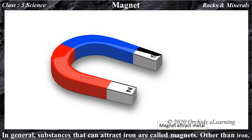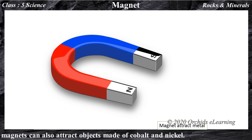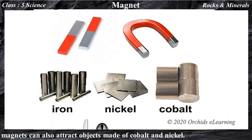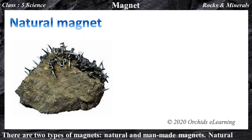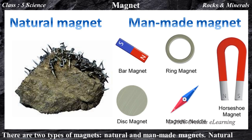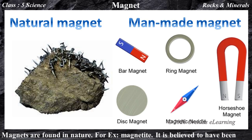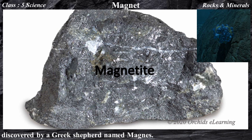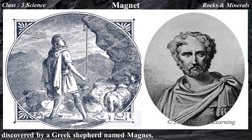In general, substances that can attract iron are called magnets. Other than iron, magnets can also attract objects made of cobalt and nickel. There are two types of magnets: natural and man-made. Natural magnets are found in nature — for example, magnetite, which is believed to have been discovered by a Greek shepherd named Magnus.